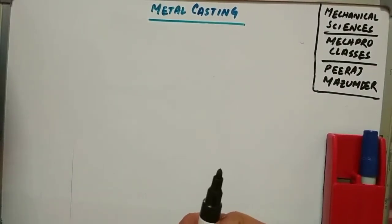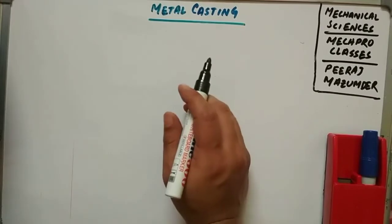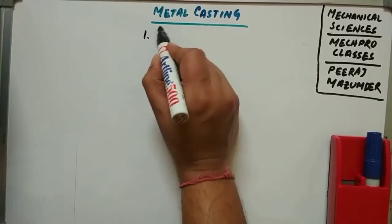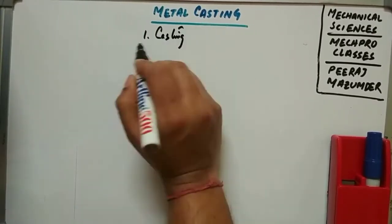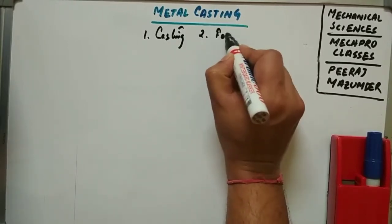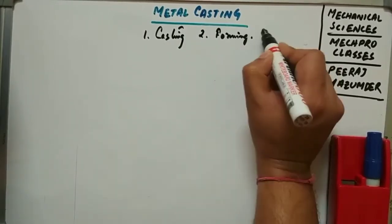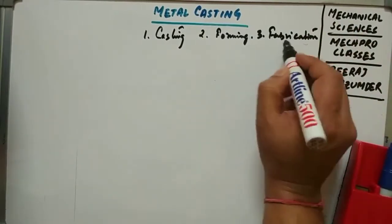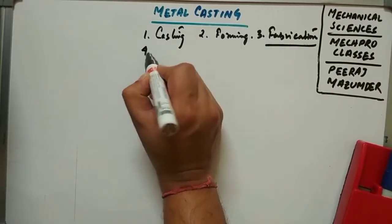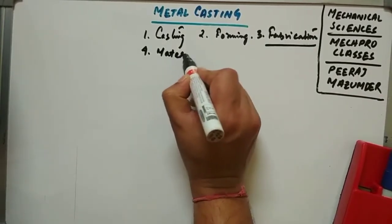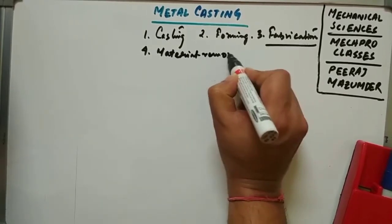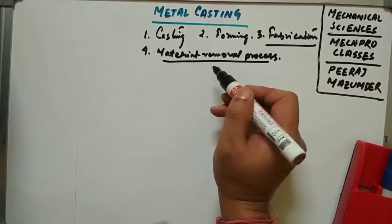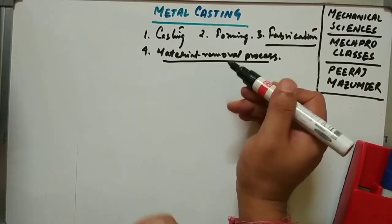There are a large number of processes available for manufacturing. The mainly common processes are: casting, forming, fabrication — where welding, soldering, and brazing come under fabrication — and the last one is material removal process, where you have turning on a lathe, shaping machine, planing machine, drilling machine, and grinding machine as well.